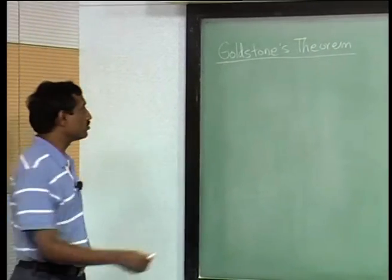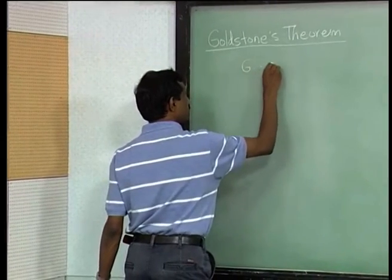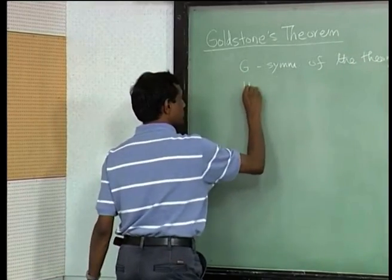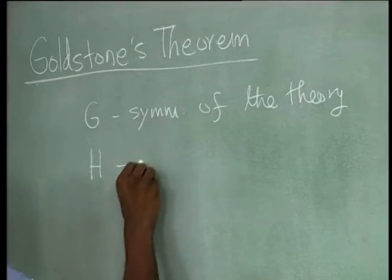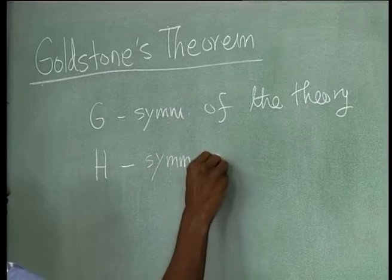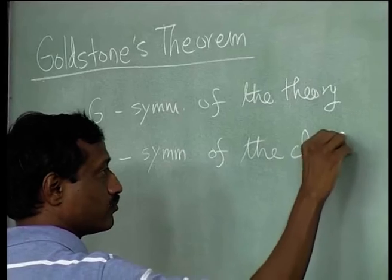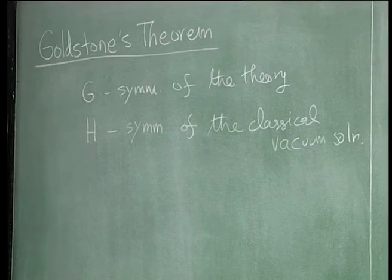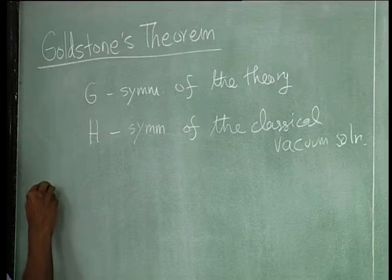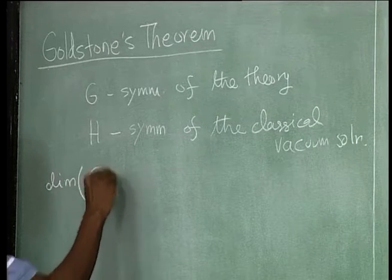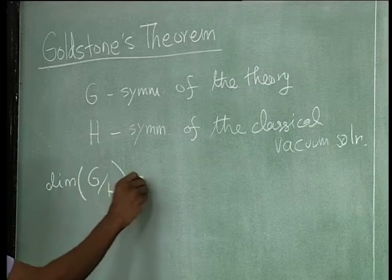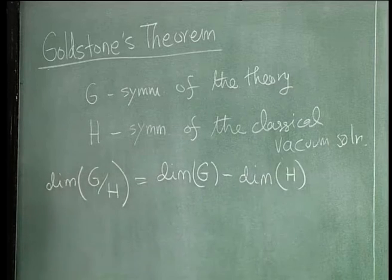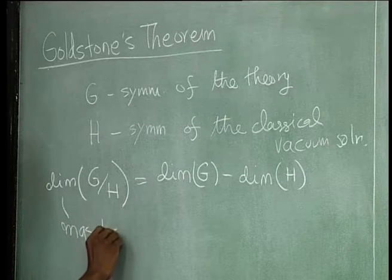We had a very nice concise statement to the whole story: if G was the symmetry of the theory and H was the symmetry of a solution, then when they were continuous symmetries, we expect dimension of G mod H — the coset space, defined to be dimension of G minus dimension of H — many massless excitations.